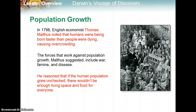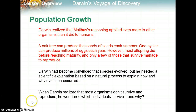Another person who helped shape Darwin's thinking was English economist Thomas Malthus. He noted that humans were being born faster than people were dying, causing overcrowding. The forces working against population growth, Malthus suggested, included war, famine, and disease. He reasoned that if the human population grew unchecked, there would not be enough living space and food for everyone. Darwin realized that Malthus' reasoning applied even more to other organisms — an oak tree can produce thousands of seeds, and oysters can produce millions of eggs each year, yet most offspring die before reaching maturity. Darwin had become convinced that species evolved, but he needed a scientific explanation for how and why evolution occurred, wondering which individuals survive and why.